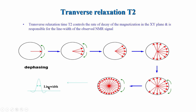A broad line has lower height because the area must remain constant — representing one proton whether T2 is high or low. If T2 is short, the line becomes broad and signal-to-noise drops dramatically. This is what happens in biomolecules: the molecule size is so large that T2 is very short. For small molecules, T2 is long, giving sharp lines; for large biomolecules, T2 is short, giving broad lines and low sensitivity.